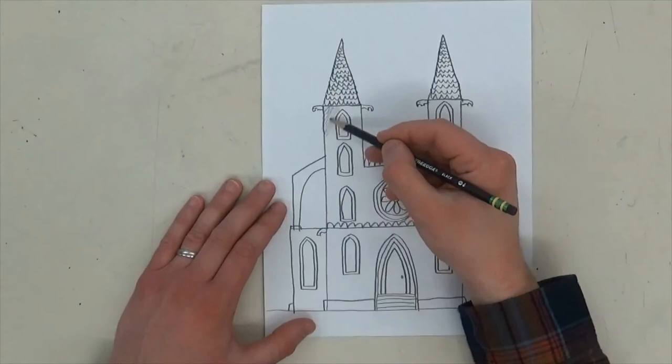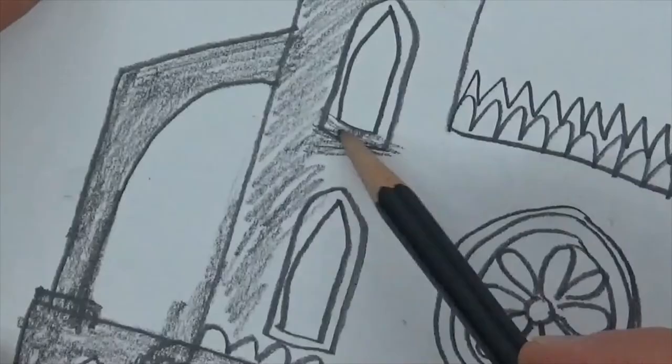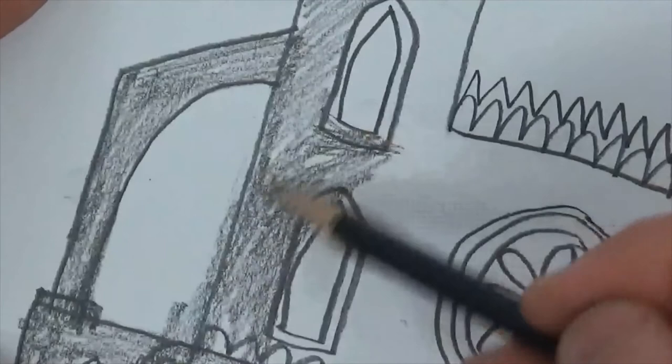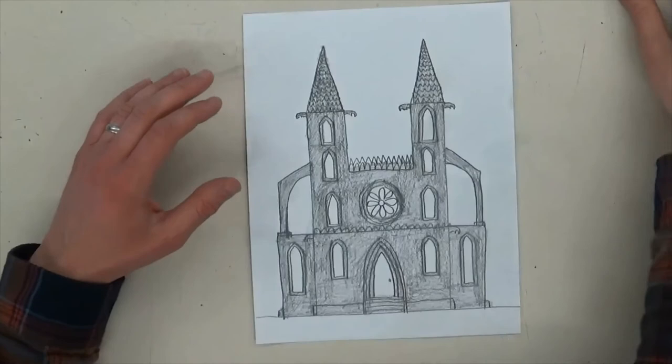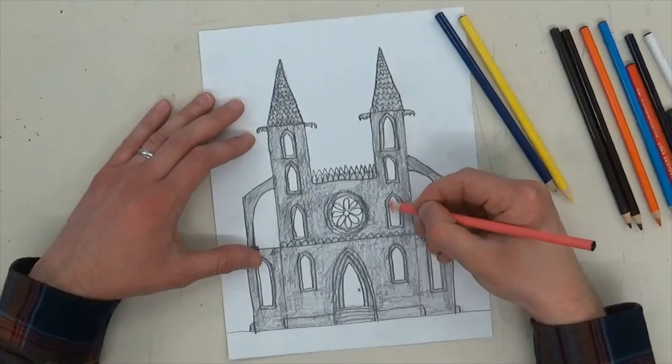These buildings are made out of stone, so I'm going to shade mine in gray. And I'll probably color in the windows. And now I'm going to add some color. I'm going to use colored pencils, but you can use whatever you want.